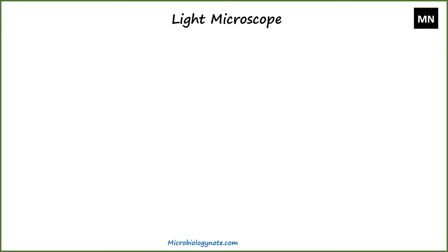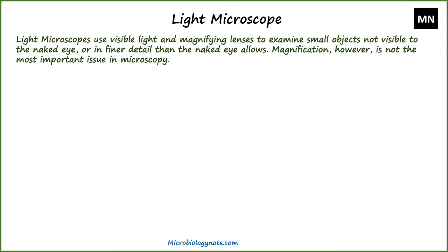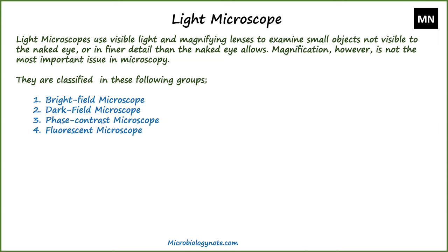Now let's talk about the light microscope. A light microscope uses visible light and magnifying lenses to examine small objects not visible to the naked eye, or in finer detail than the naked eye allows. Magnification, however, is not the most important issue in microscopy. The light microscope is classified into four categories as we discussed earlier, and we will now discuss each of them.